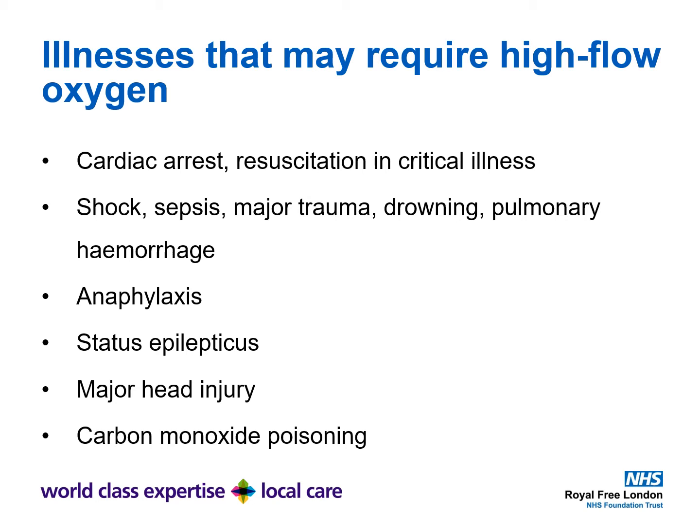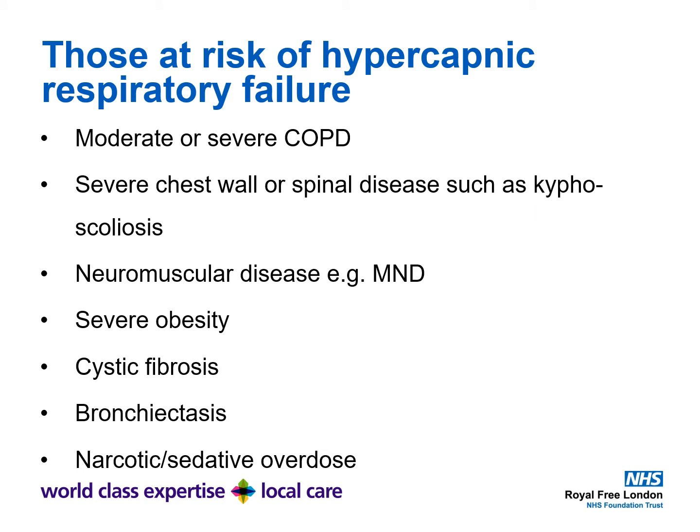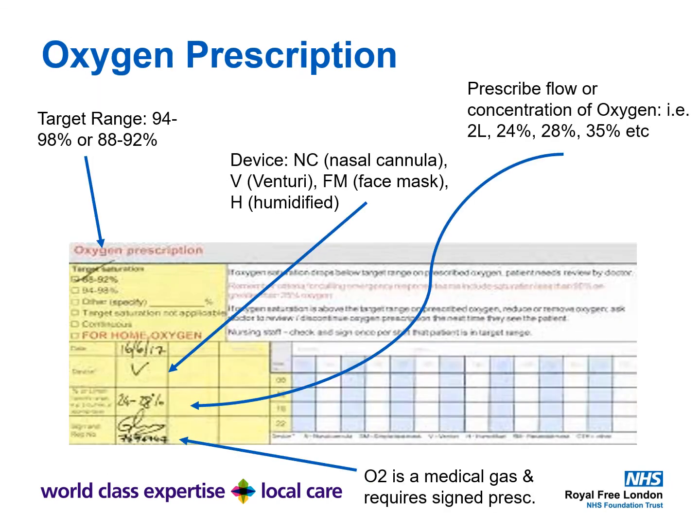Illnesses that may require high-flow oxygen include cardiac arrest, resuscitation and critical illness, shock, sepsis, major trauma, drowning, pulmonary hemorrhage, anaphylaxis, status epilepticus, major head injury, and carbon monoxide poisoning. Conversely, those at risk of hypercapnic respiratory failure include moderate or severe COPD, severe chest wall or spinal disease such as kyphoscoliosis, neuromuscular disease such as motor neuron disease, severe obesity, cystic fibrosis, bronchiectasis, and narcotic or sedative overdose.